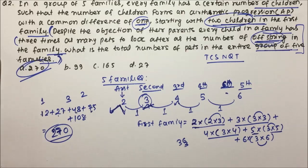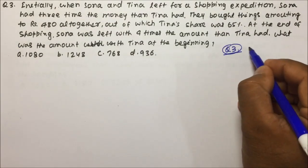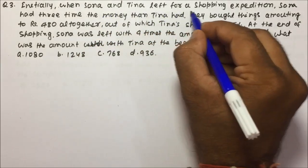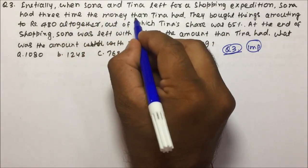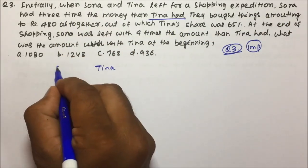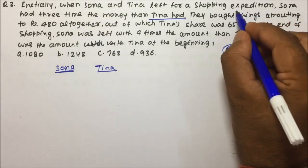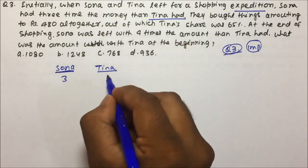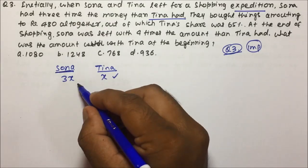Moving to question number 3 — also an important question. Initially, when Sona and Tina left for a shopping expedition, Sona had 3 times the money that Tina had. Suppose Tina had X rupees, then Sona had 3X rupees.